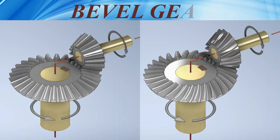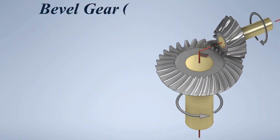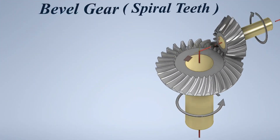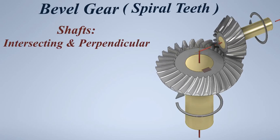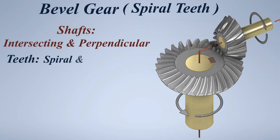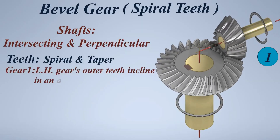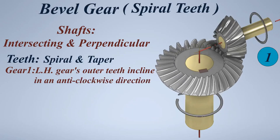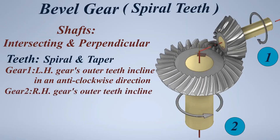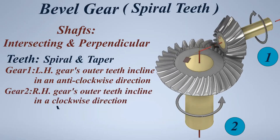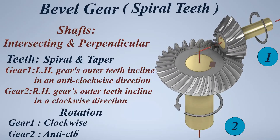Spiral Bevel gear. Shafts: intersecting and perpendicular. Teeth: spiral and taper. Gear 1: left hand — outer teeth incline in an anticlockwise direction. Gear 2: right hand — outer teeth incline in a clockwise direction. Rotation — Gear 1: clockwise, Gear 2: anticlockwise.